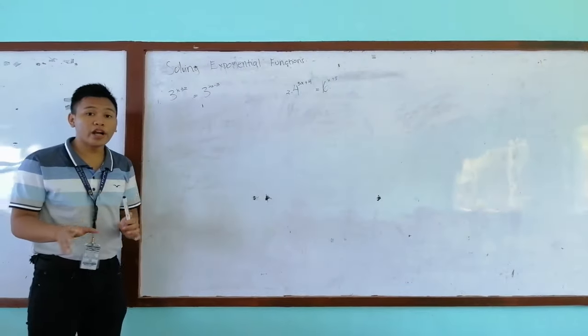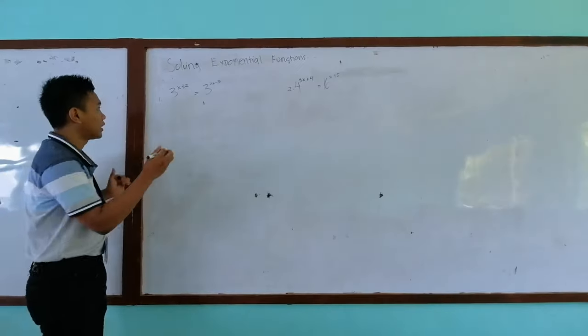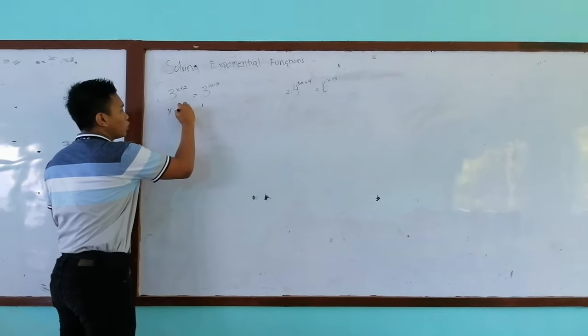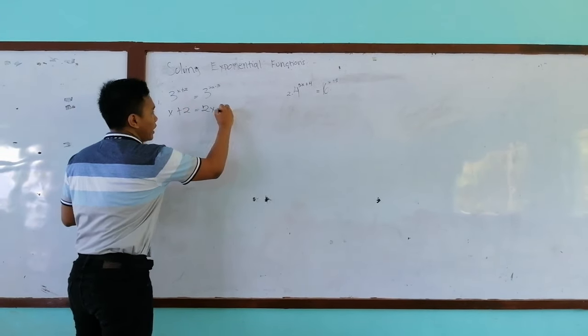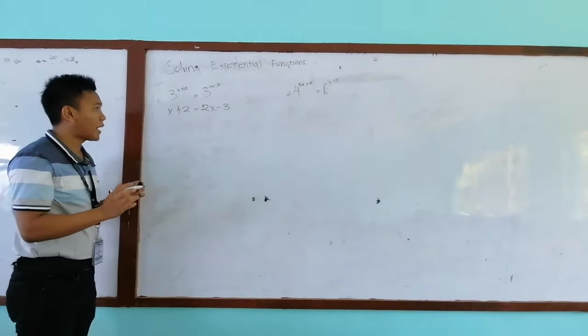So the next step is that we will disregard the base and just focus on our exponent. So it will become x plus 2 is equal to 2x minus 3. After this, we will just combine like terms.